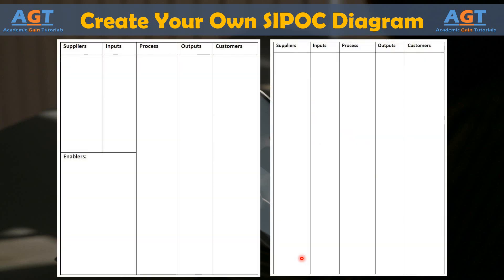Whether working in a team or on your own, choose a process you know about and practice creating your own diagram. Pick a process associated with your business or a business example you have experience with, and use these templates to get started with creating your own SIPOC diagram of your business or process.